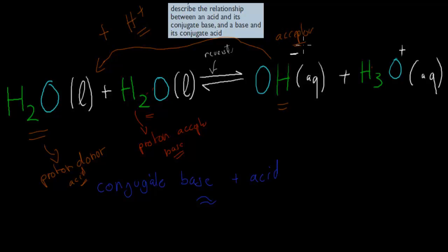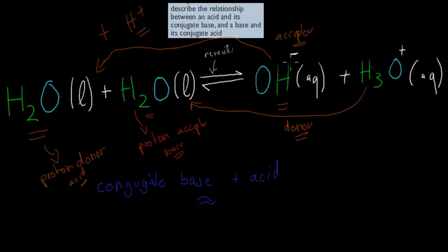So for the reversible reaction, the hydroxide is the acceptor. Whereas this hydronium ion has given that hydrogen to the hydroxide group, so in the reversible reaction it has become the donor. In the forward reaction this one is the donor and this is the acceptor. But in the reversible reaction, the hydroxide acts as the base because it accepts a proton, whereas the hydronium ion donates a hydrogen, making it the acid.